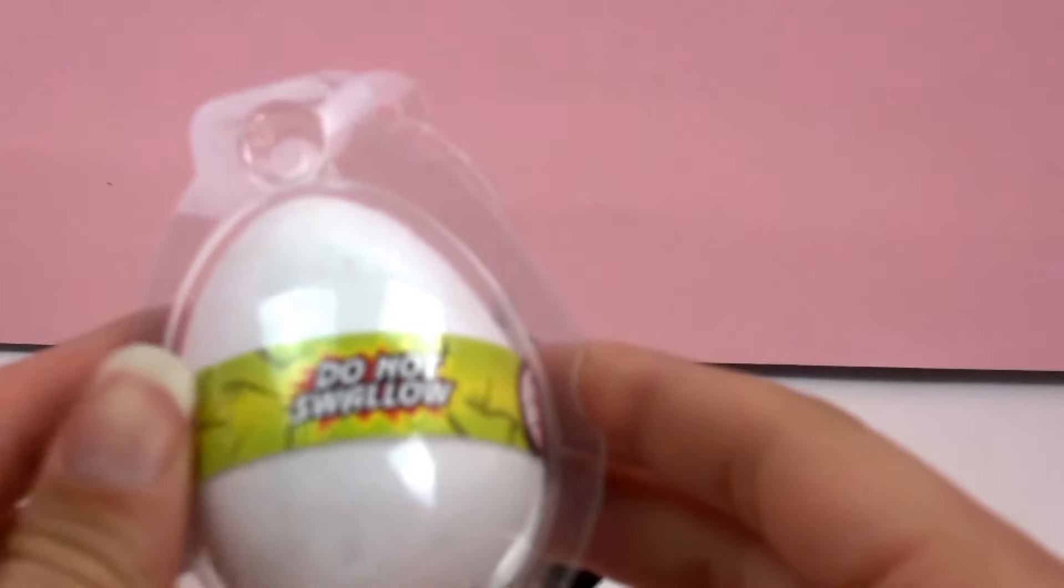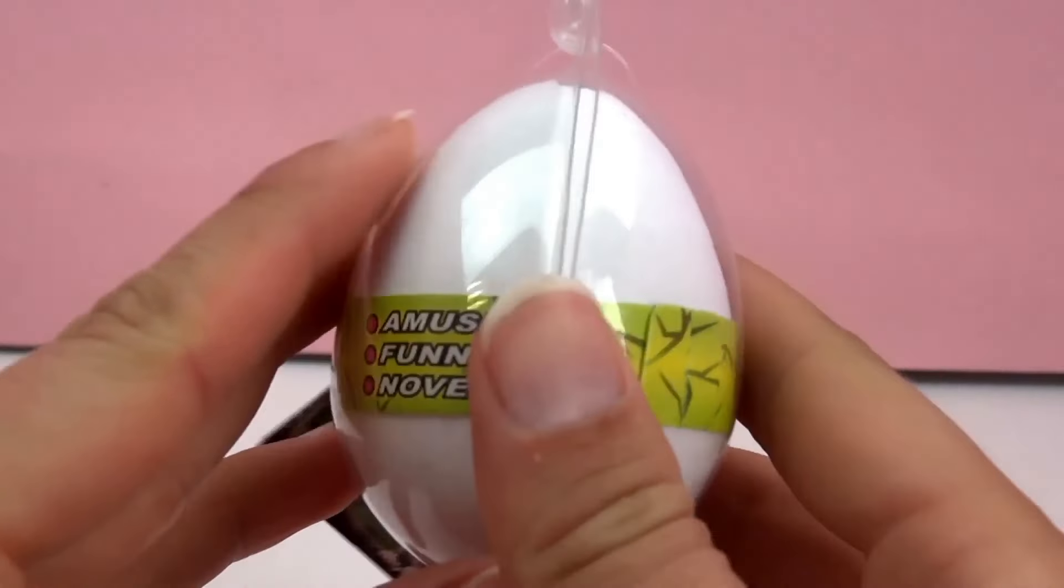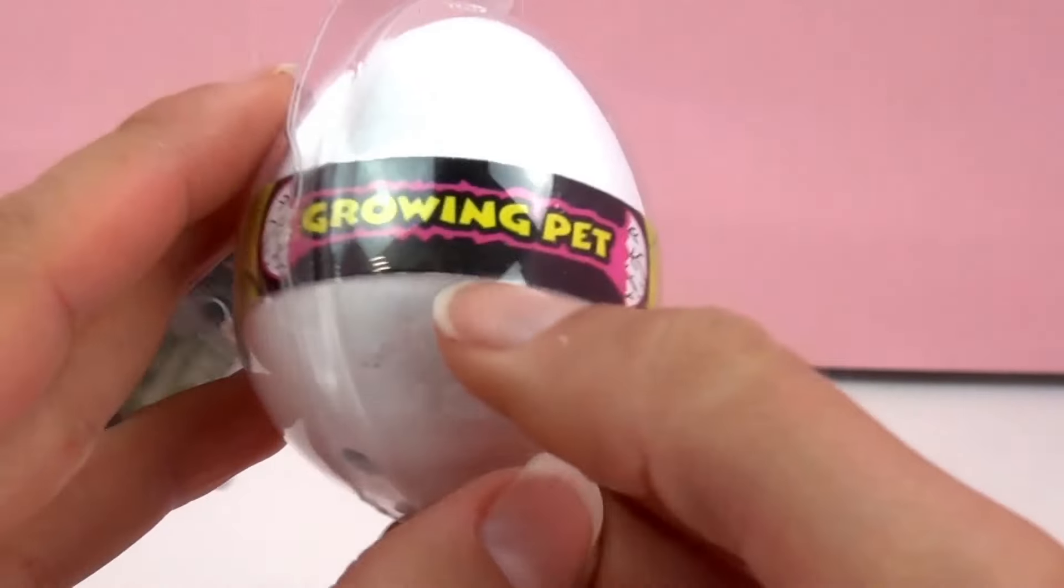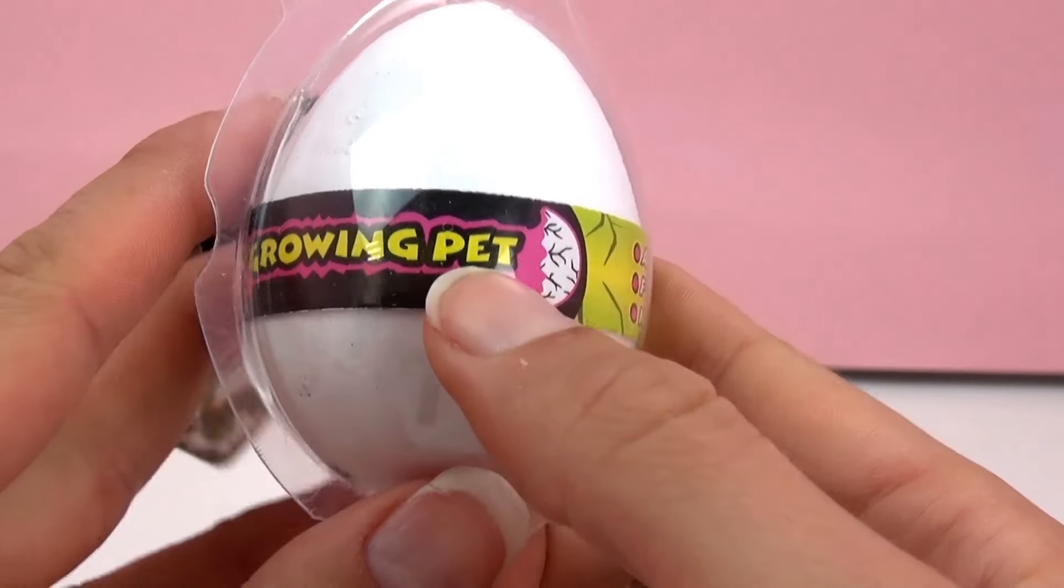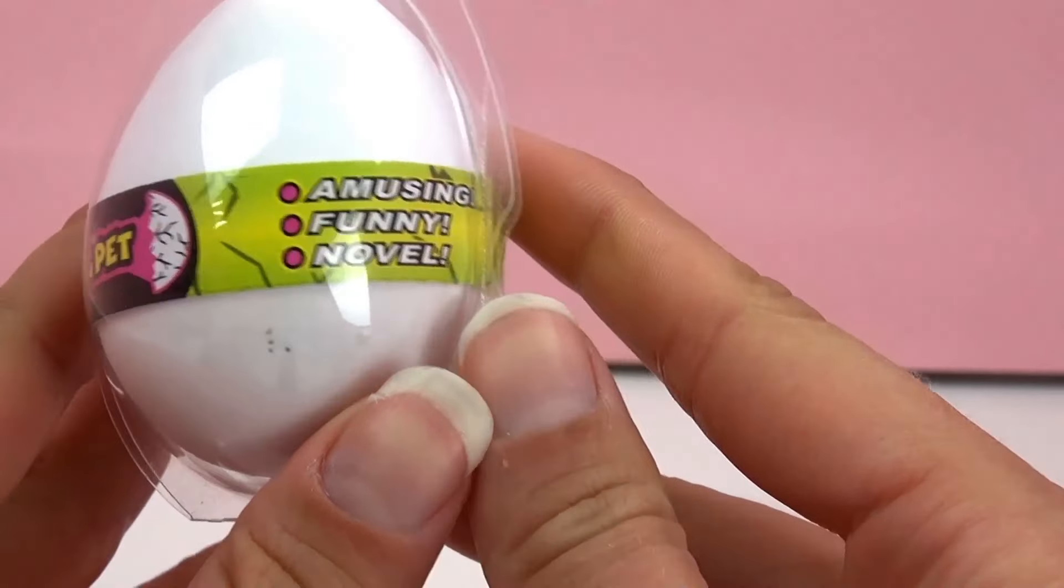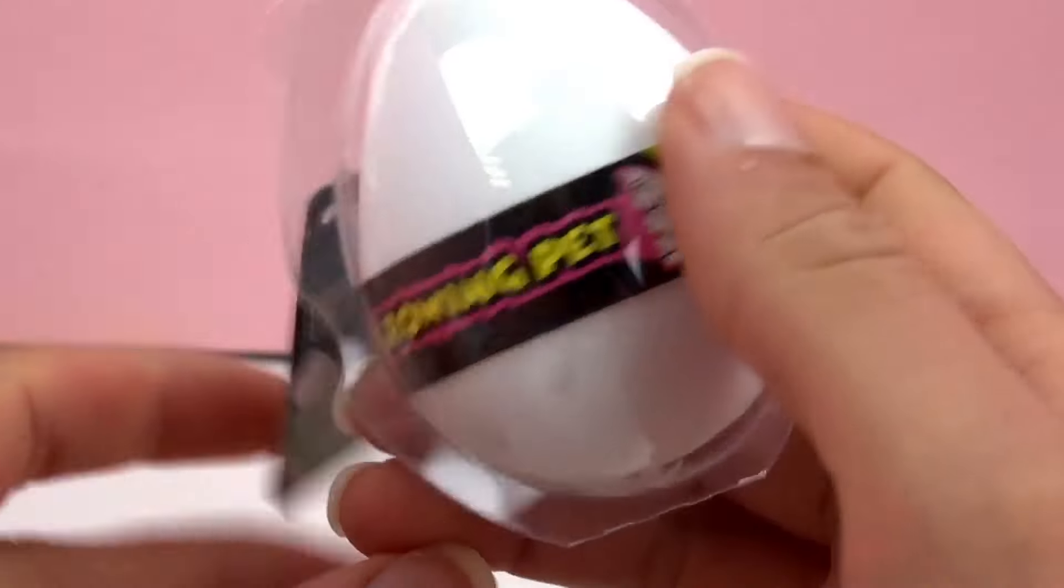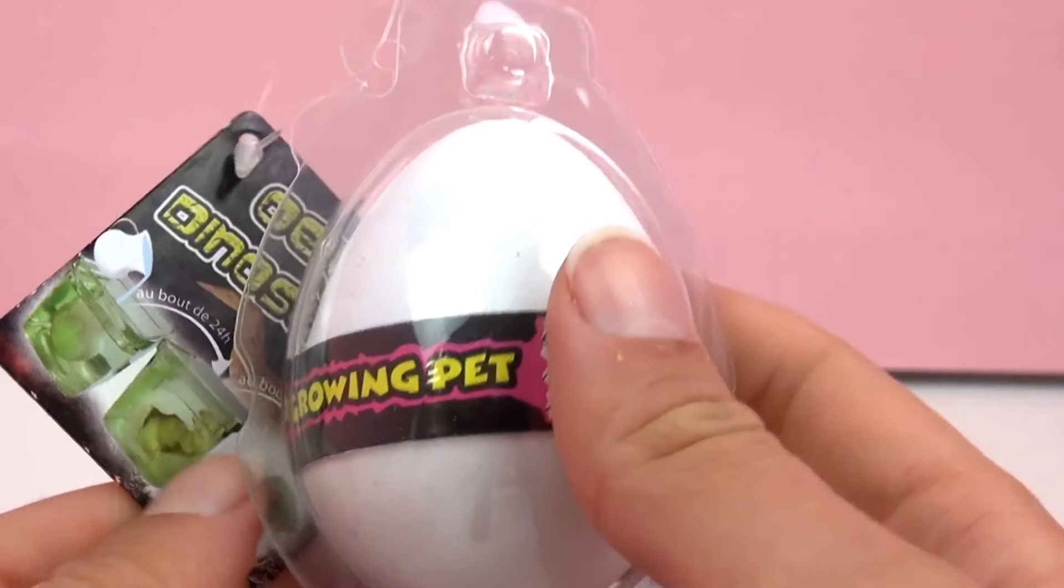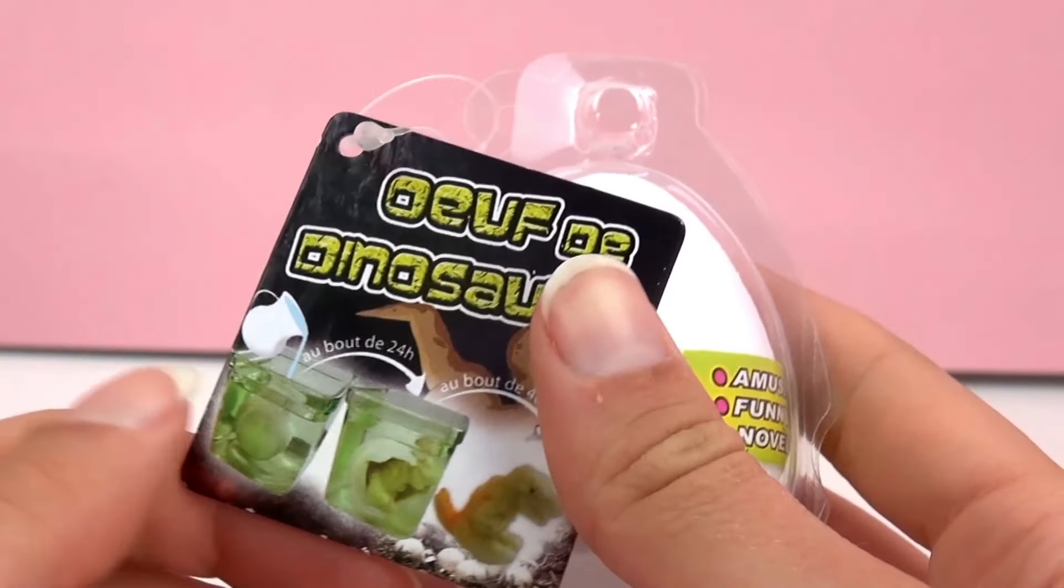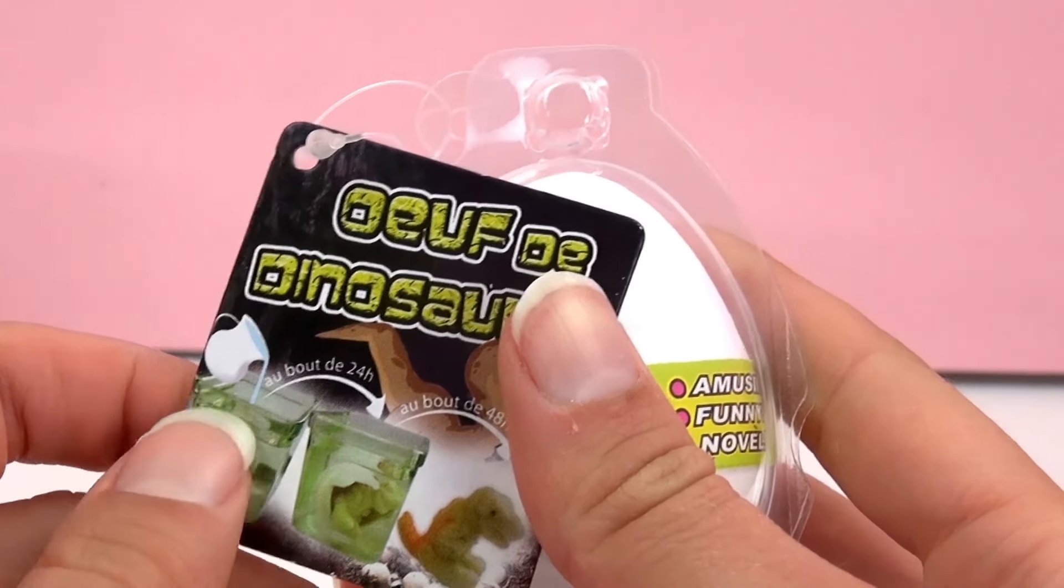I have for you guys today a dinosaur egg. It says do not swallow on it, and it's called Growing Pet. Inside it says amusing, funny, novel. So this is a cool original toy, and a dinosaur will grow in here.